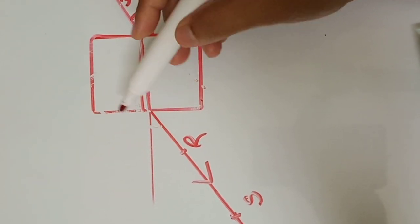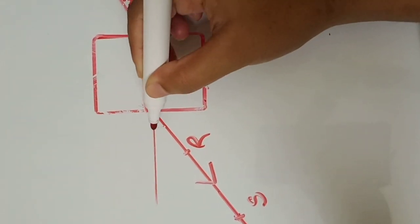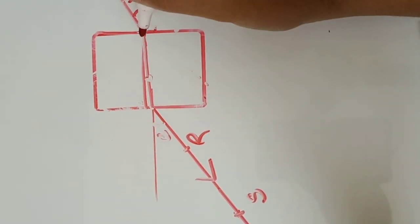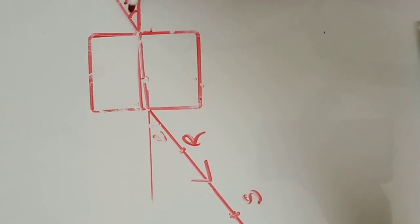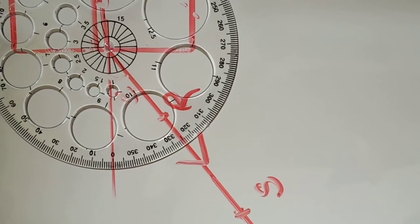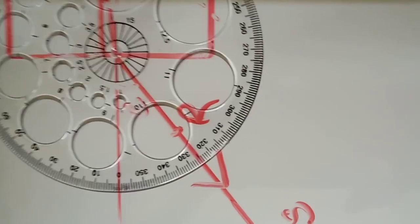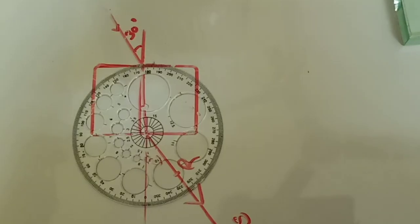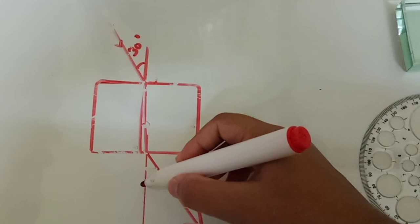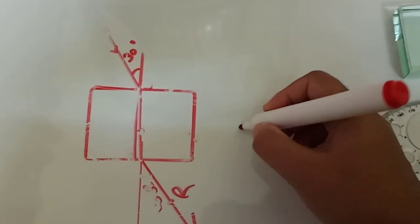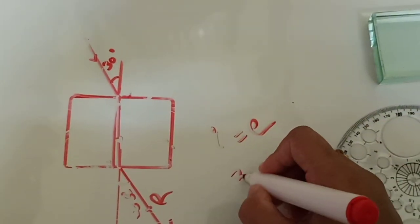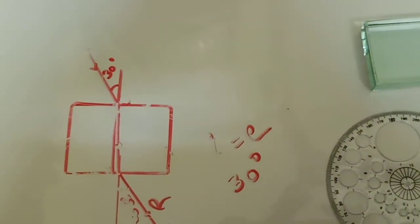At this point, it goes from denser to rarer, so it bends away from the normal. And this angle is called the angle of emergence, represented by e. The angle between the normal and emergent ray is the angle of emergence, and this is your refracted ray. Now just measure the angle of emergence and you will see that it comes out to be 30 degrees. So angle of emergence also comes out to be 30 degrees, which is exactly equal to the angle of incidence. So this is your first observation: angle of incidence is equal to the angle of emergence.